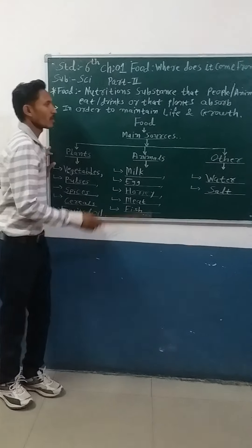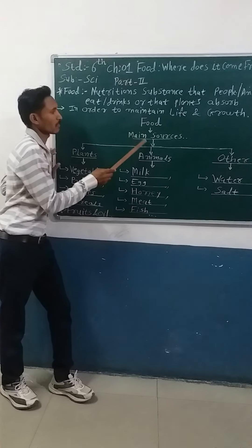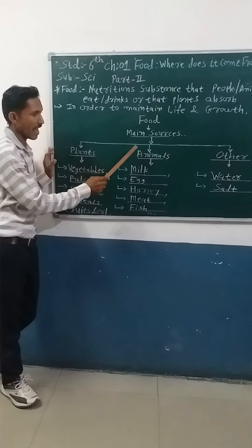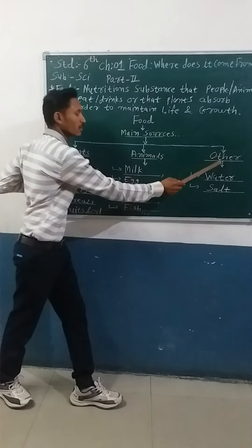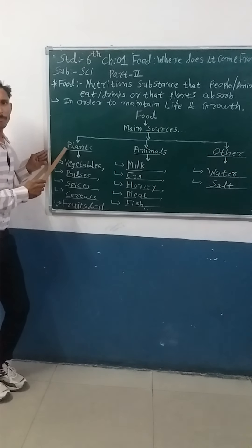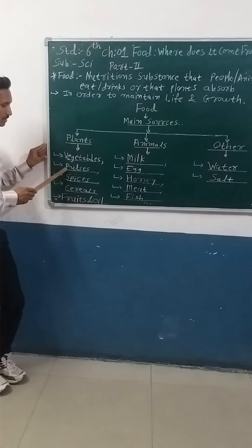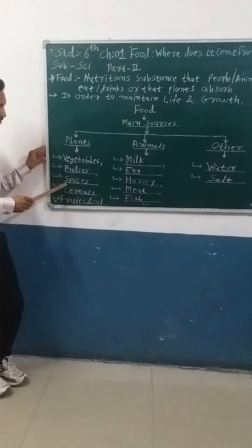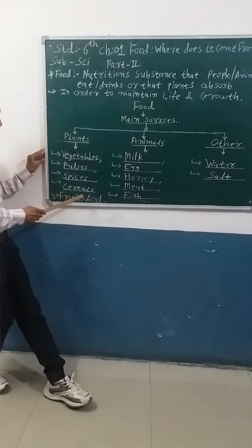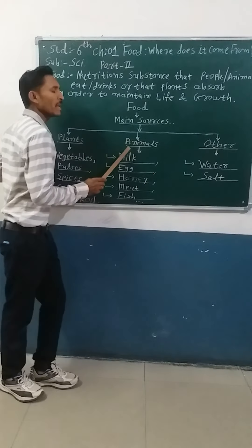Now, the main sources of food. The main sources of food are plants, animals, and other sources. From plants, we get vegetables, pulses, spices, cereals, fruits, oil, and so on.